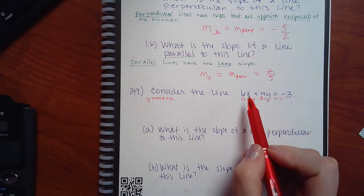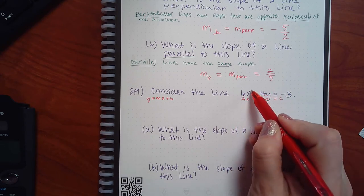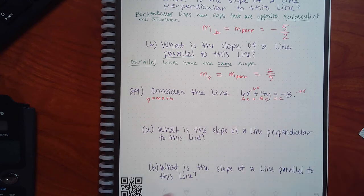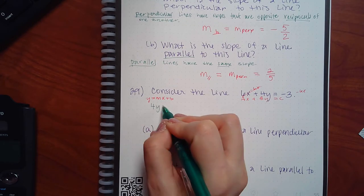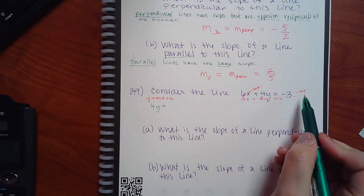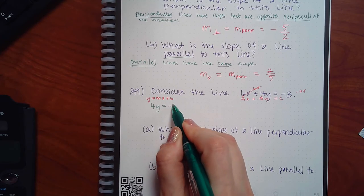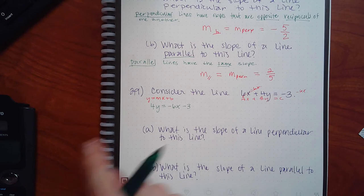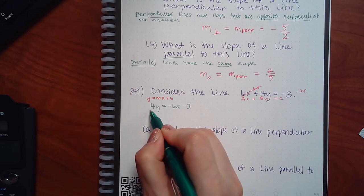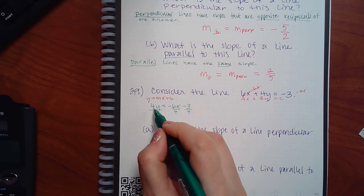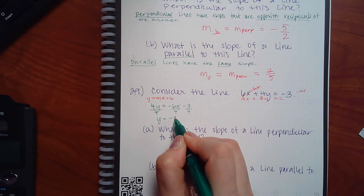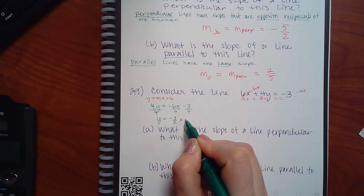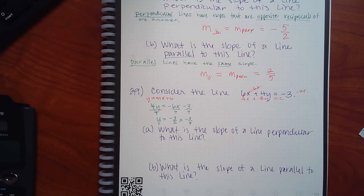First, get the term with y by itself — subtract 6x from both sides. So I have 4y = negative 6x minus 3, but I want the x term first, then the constant. Now divide everything by 4. This becomes negative 3/2 x, and the constant becomes negative 3/4. If you're unsure whether a fraction reduces, type it in the calculator.